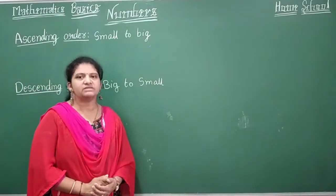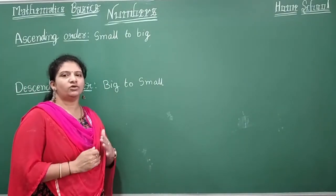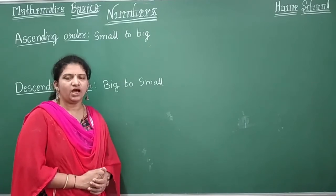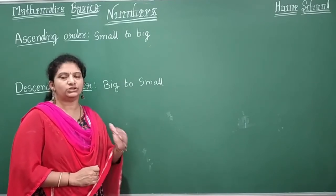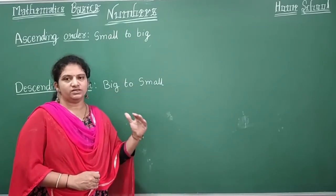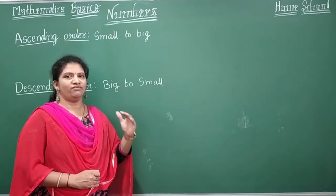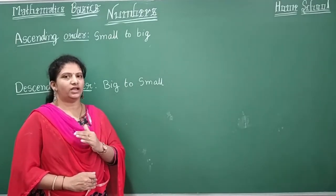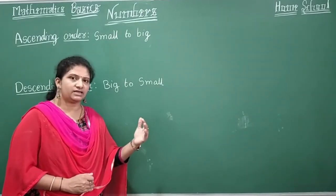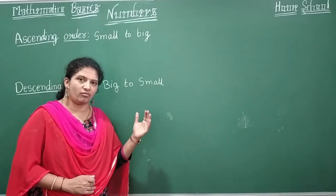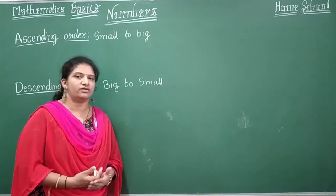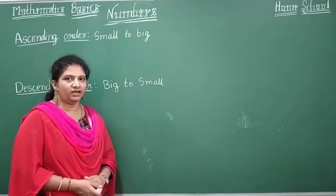When you talk about counting numbers, in forward counting you have seen 1, 2, 3, 4 — your numbers are increasing. In backward counting, 5, 4, 3, 2, 1 — your numbers are decreasing. So when numbers are increasing, that order is ascending order, and when numbers are decreasing, that order is descending order.